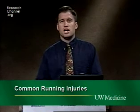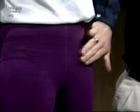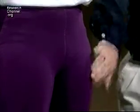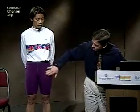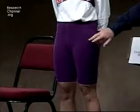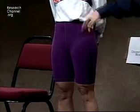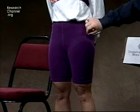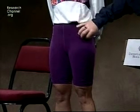The stress fractures that cause pain in the hip area are the pubic ramus — a bone that runs in the front of the pelvis — where pain is usually in that location; the proximal femoral shaft, the upper thigh bone, which usually causes pain in that location; and lastly the femoral neck, which is the very top of the femur. The femoral neck is where the hip bone comes out, connecting the femur to the hip joint.